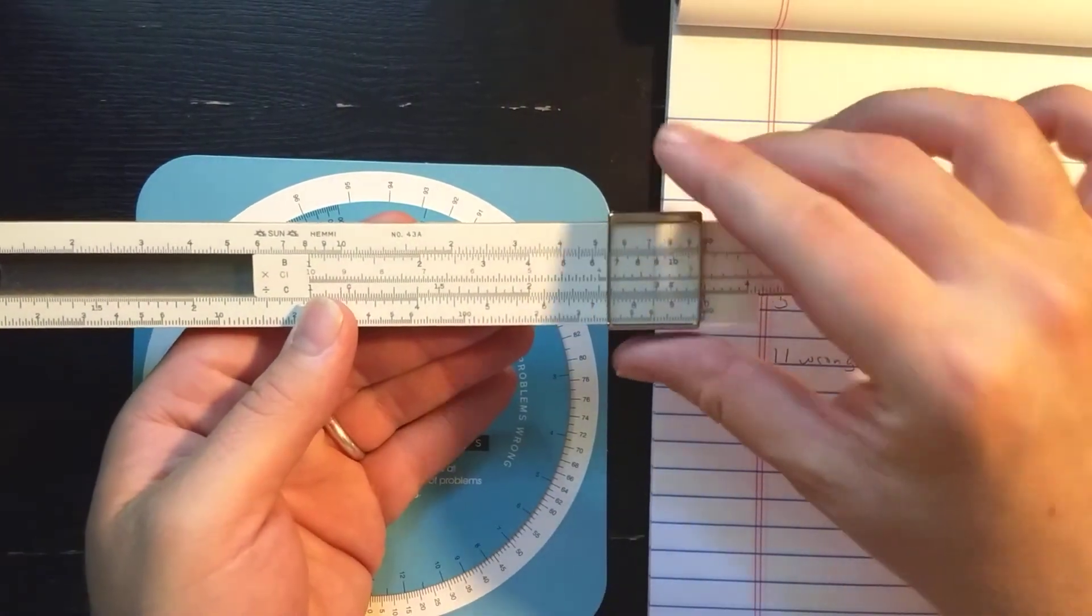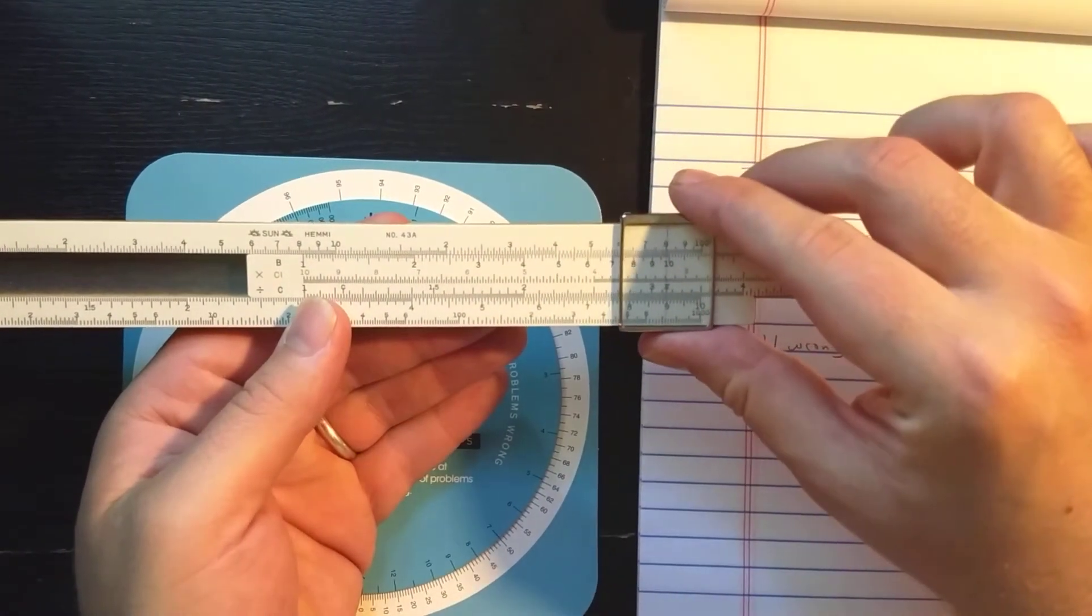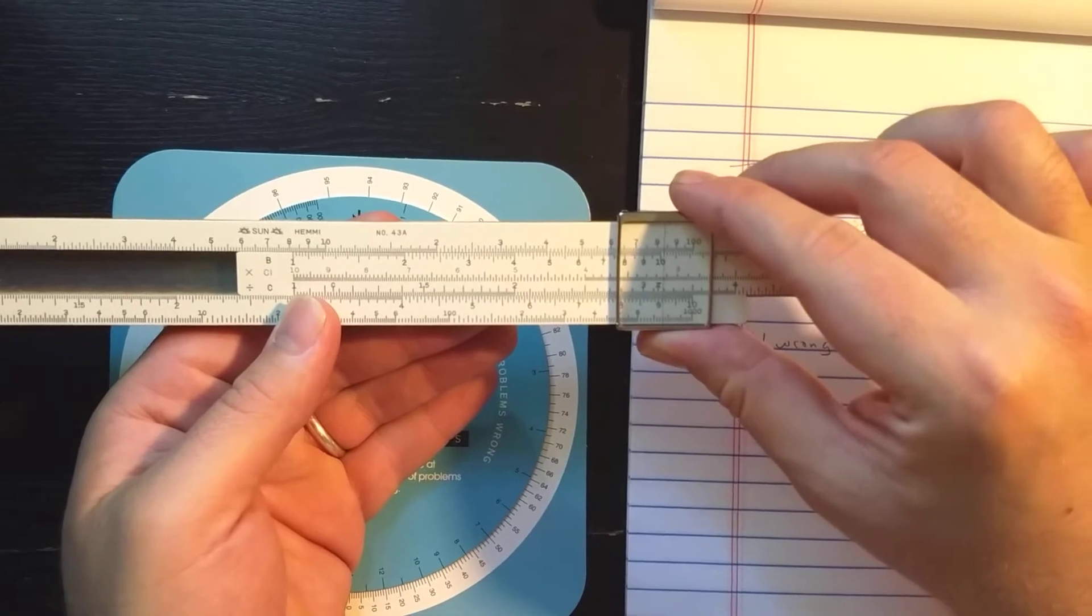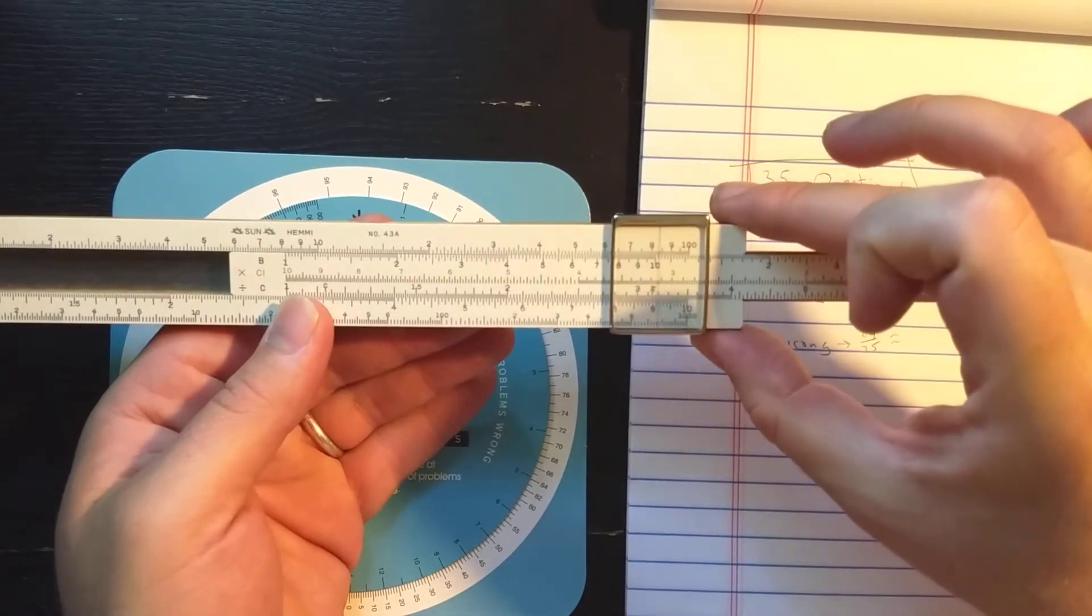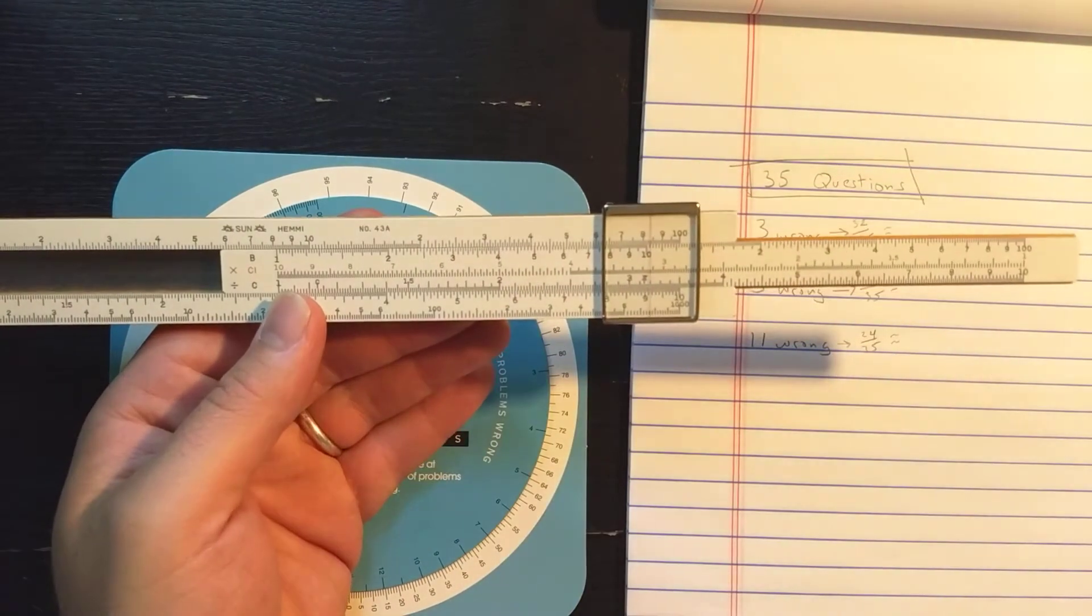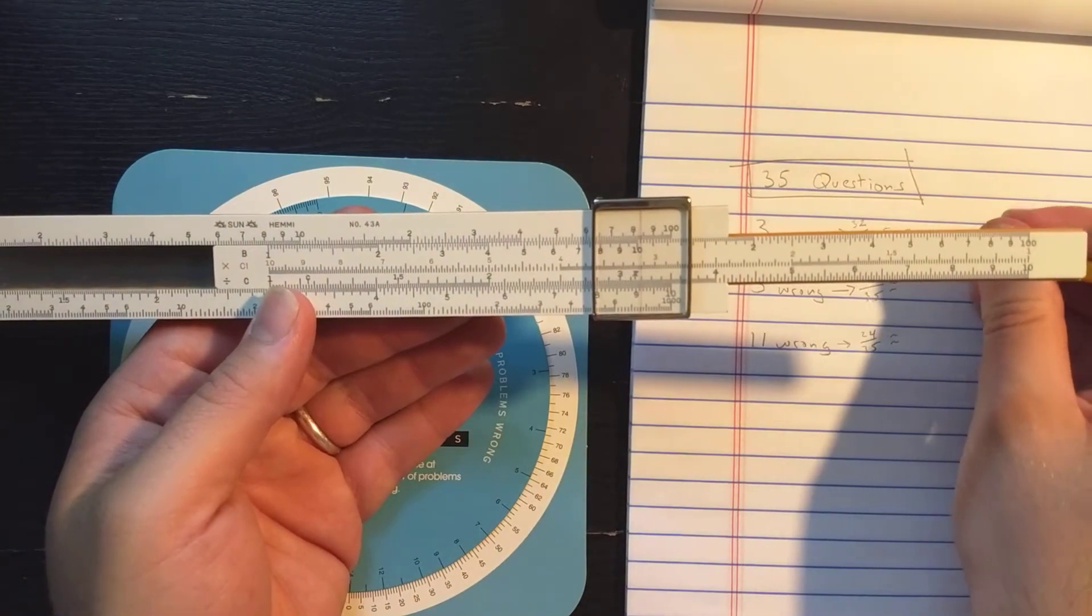So 32 here, here's the three. 32 is there. And you can see on the D scale, it looks like it's between 91 and 92, so I'll round that student's grade up to 92%.